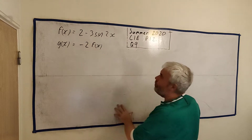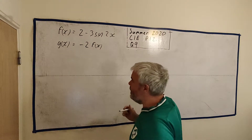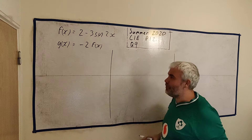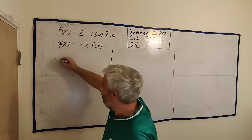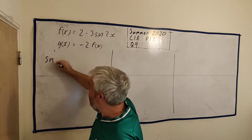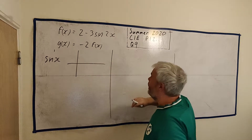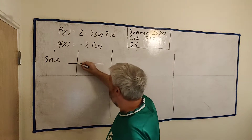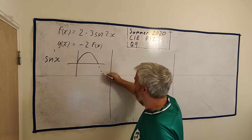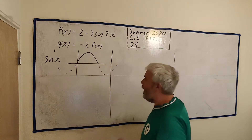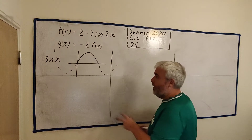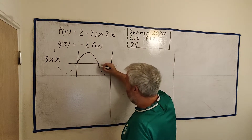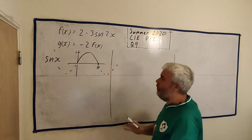Looking at f(x), I'll understand the number 2 and the sine — the sine is the harder bit. Starting off, let's look at sin(x). They're only asking us to go between zero and pi. Between zero and pi, sine never goes below zero. It stops at pi, and it goes up to 1.